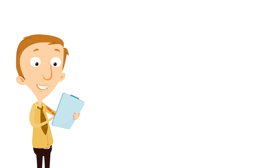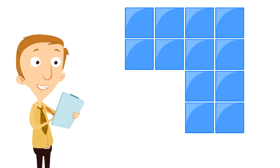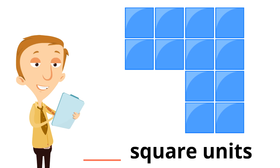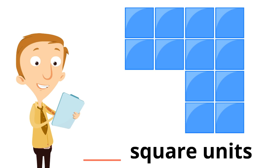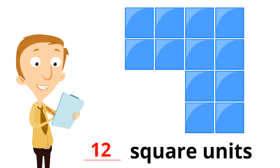Now, we are going to look at an irregular shape. What is the area of this shape? Just like we did with the others, we are going to measure the area of this shape using square units. How many square units are inside of this shape? Feel free to pause this video to give yourself time to count them. Were you able to count all of them? Yeah, 12 square units. Great job. There are 12 square units in this irregular shape.